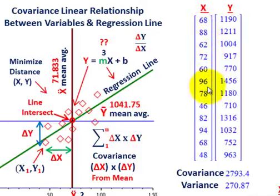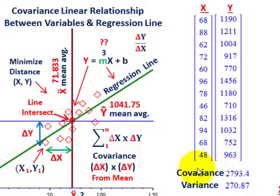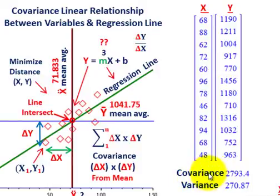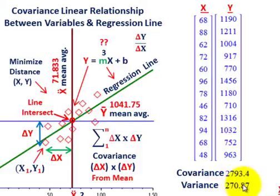Here are my x values and y values. Plugging them into a function — I was using Maplesoft to determine the covariance and variance — based on those numbers I come up with a covariance equal to 2793.4 and a variance of 270.87.